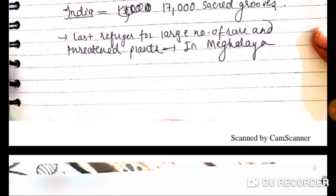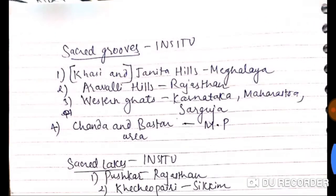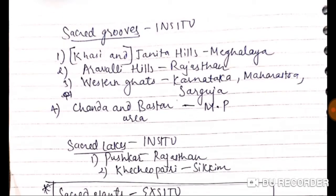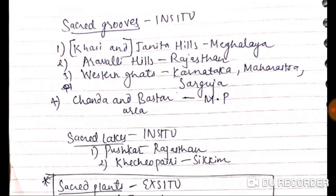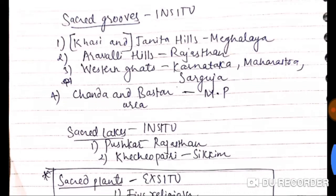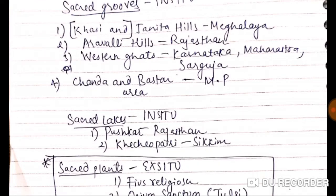Large refuges for rare and threatened plants are found in Meghalaya. Sacred groves are forest patches and water bodies protected due to religious sensitivity. India has about 17,000 sacred groves. Key locations include Khasi and Jaintia Hills in Meghalaya, Aravalli Hills in Rajasthan, Western Ghats in Karnataka and Maharashtra, and Sarguja, Chanda, and Bastar in Madhya Pradesh.